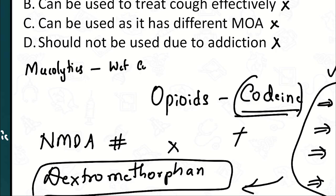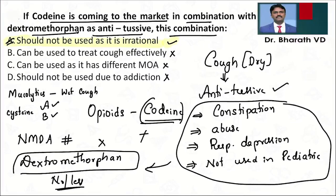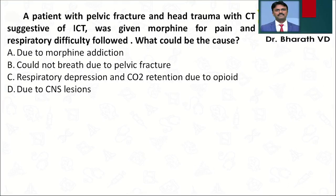Now, for wet productive cough with thick white sputum, tell me what the mucolytics are. What are the A and B drugs used as mucolytics? A drug used as a mucolytic ends with 'cystine' — tell me in the comment section.